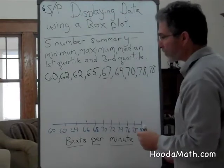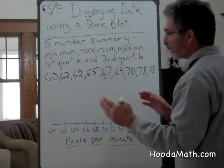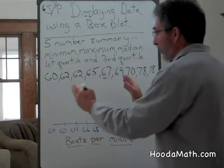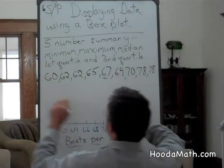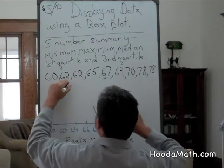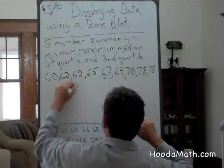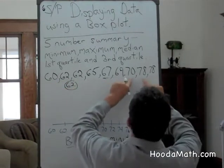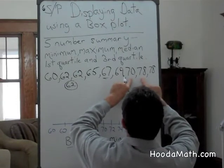the first quartile which is the median of the numbers below the median. So it's these four numbers. Halfway between that would be 62. Halfway between these two numbers, 70 and 78,